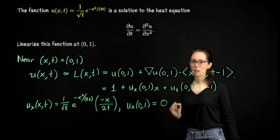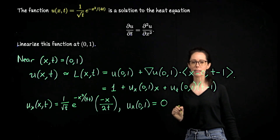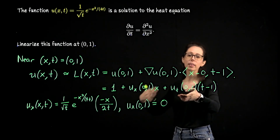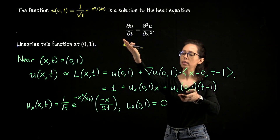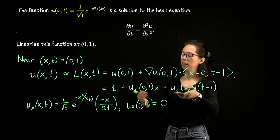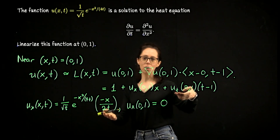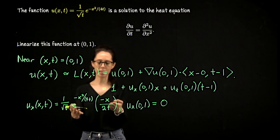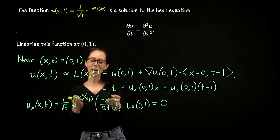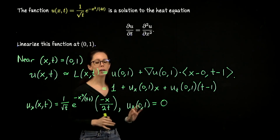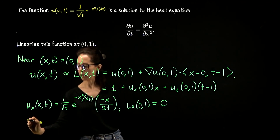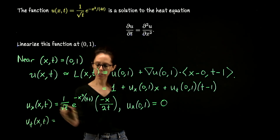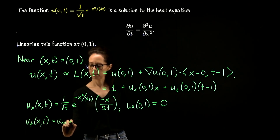We have a decision to make. We can either differentiate u with respect to t directly, or because this function solves the heat equation, we can instead differentiate again with respect to x — that is, compute u_xx as a substitute for u_t. I'm going to do that, because I already have two terms and I prefer where x is situated in this expression compared to where t is situated.